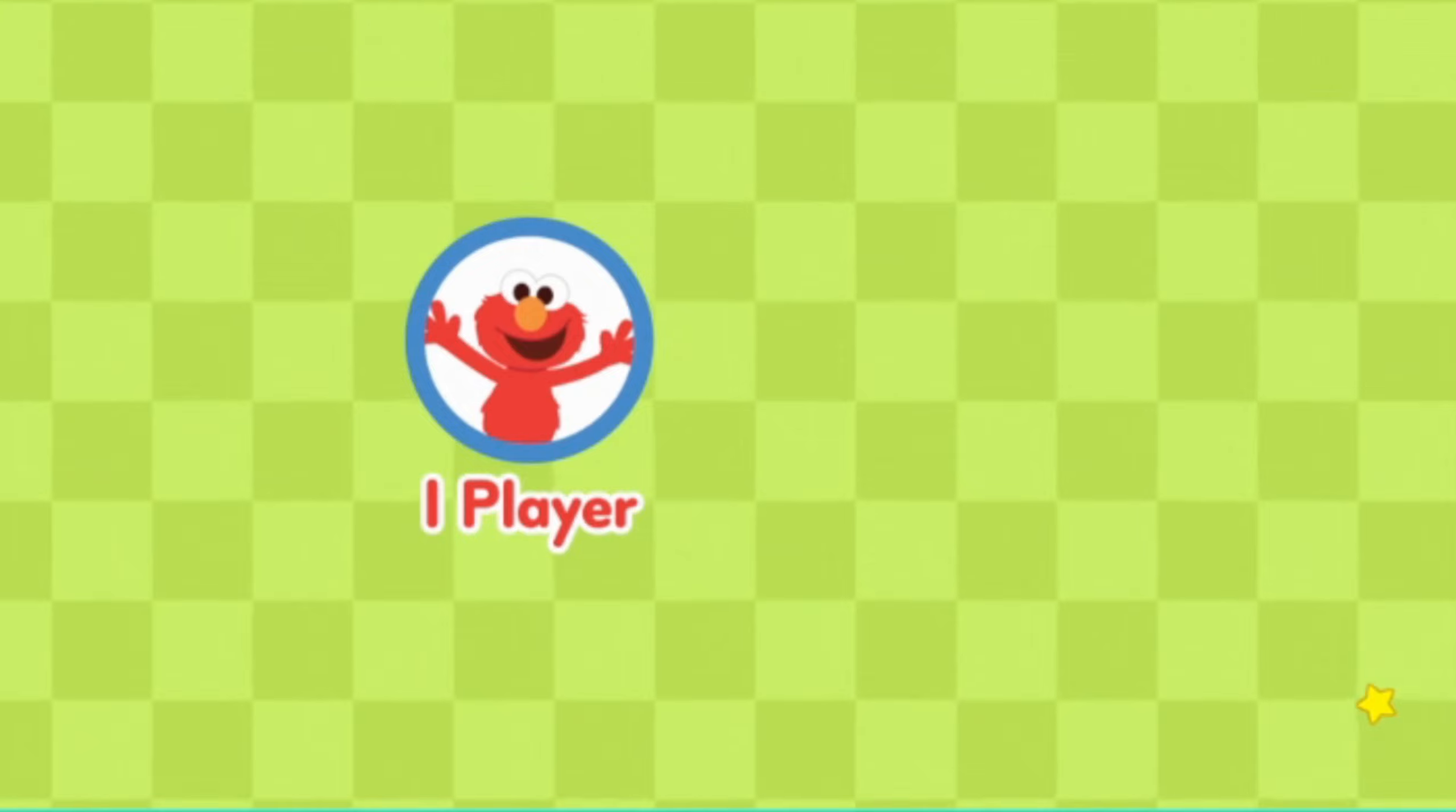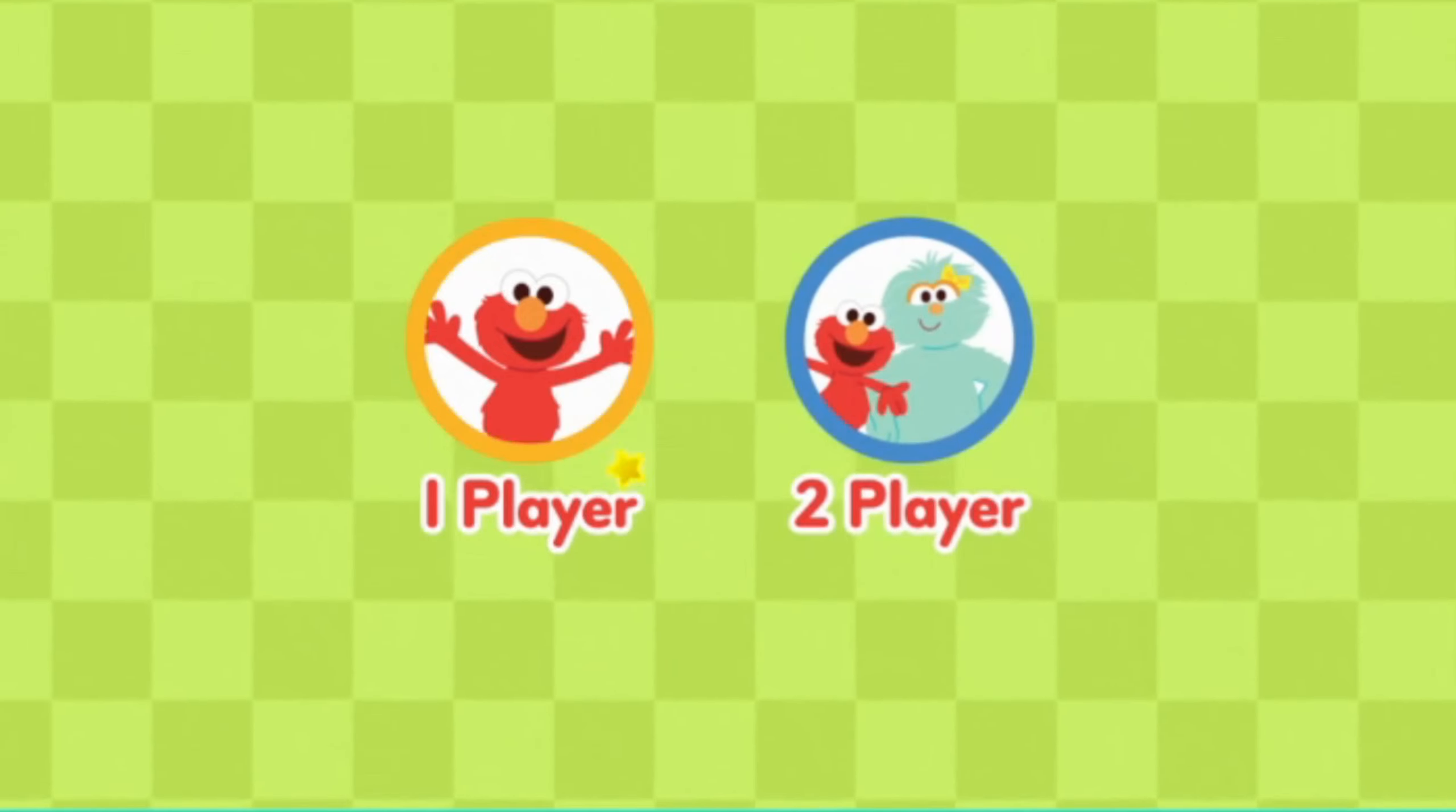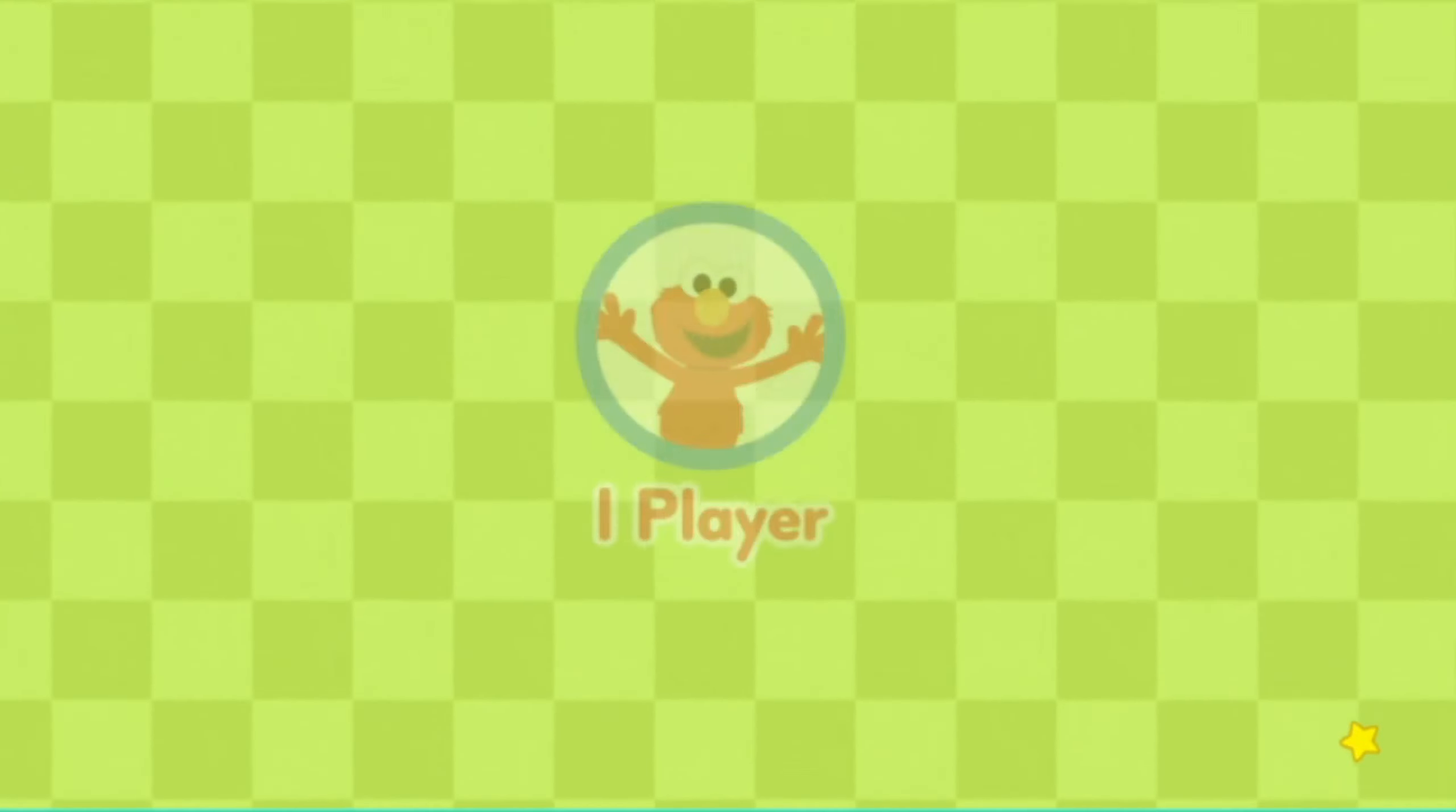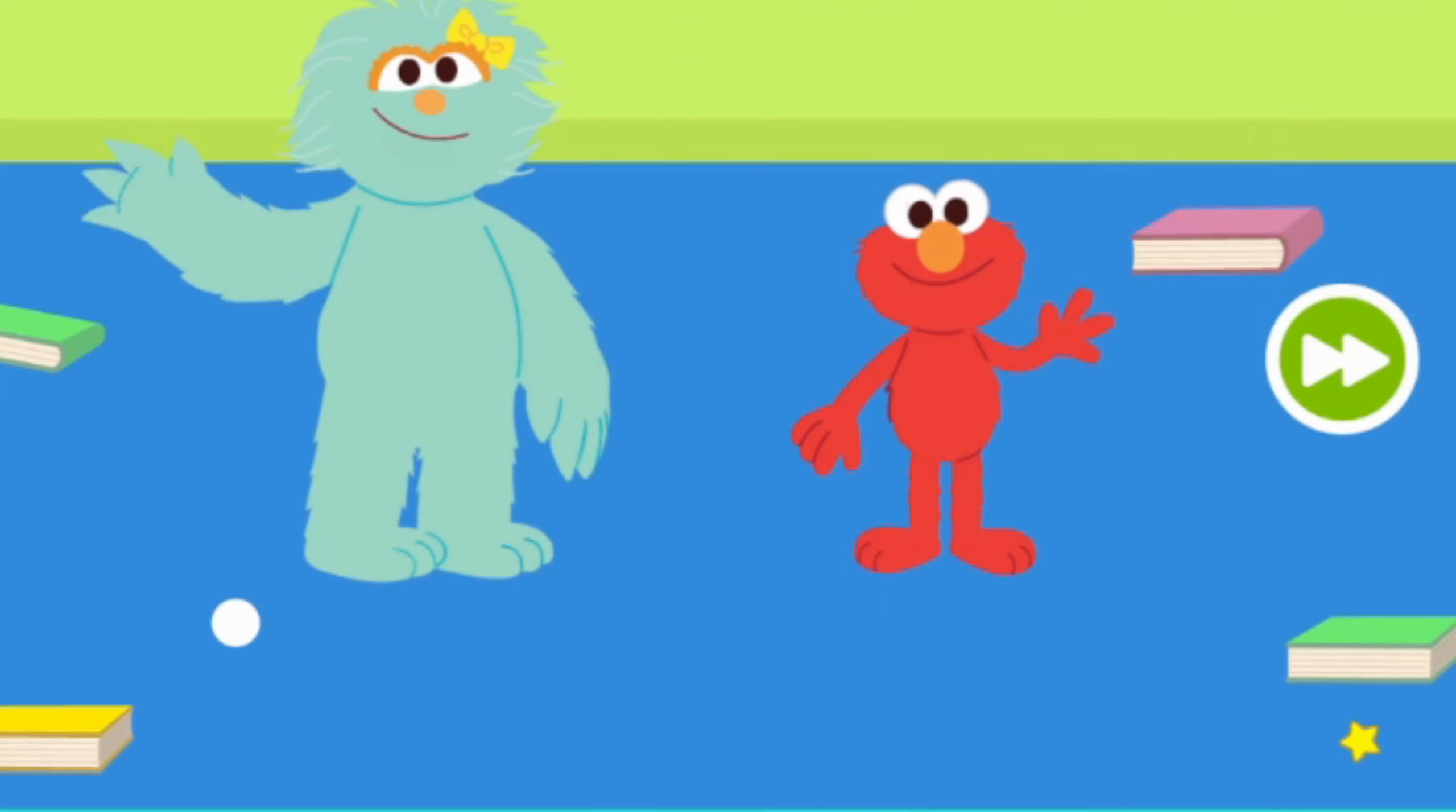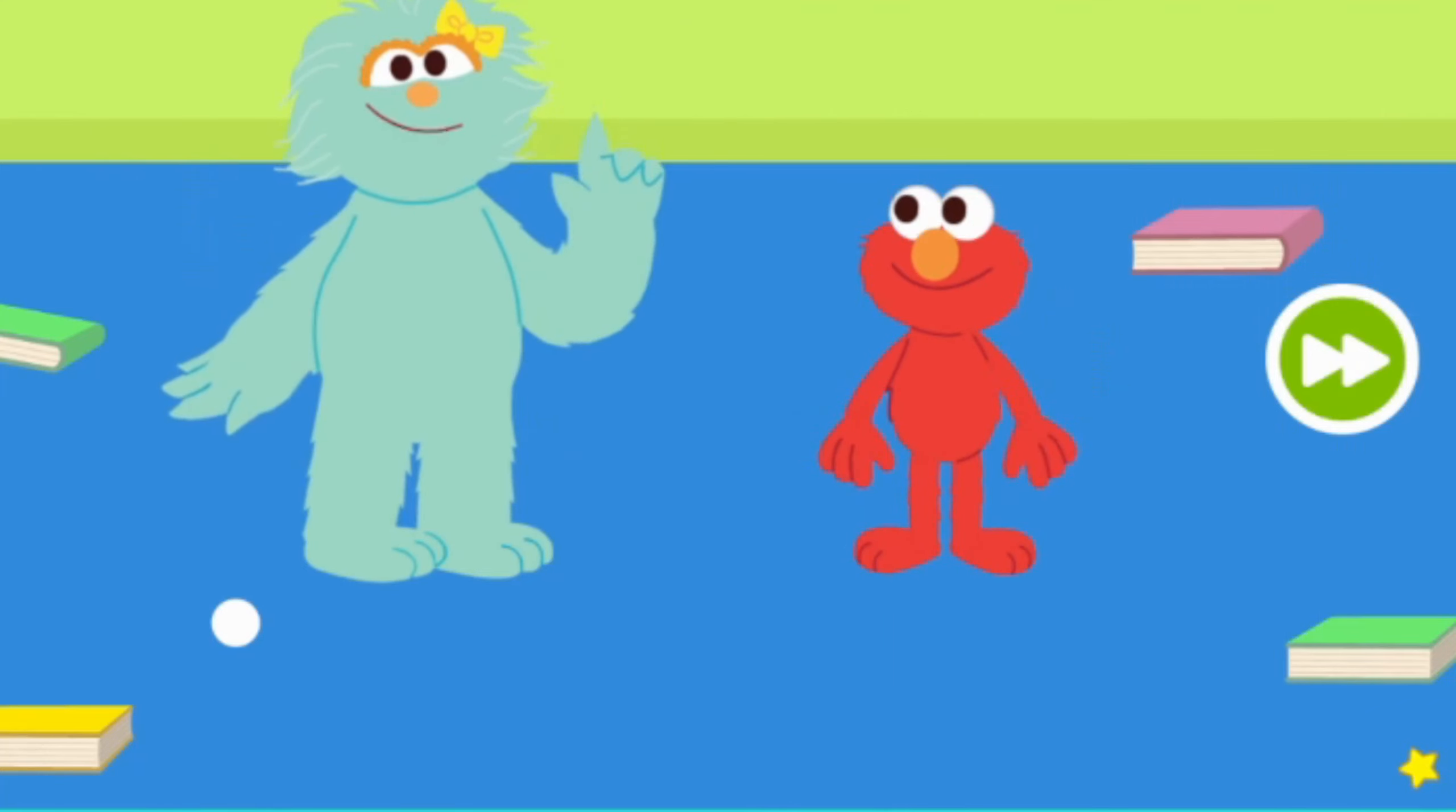Is there one player or two players? One player. Elmo and Rosita want to race our ping pong balls, but there's a problem. We don't have a racetrack. What do we say when we have a problem?